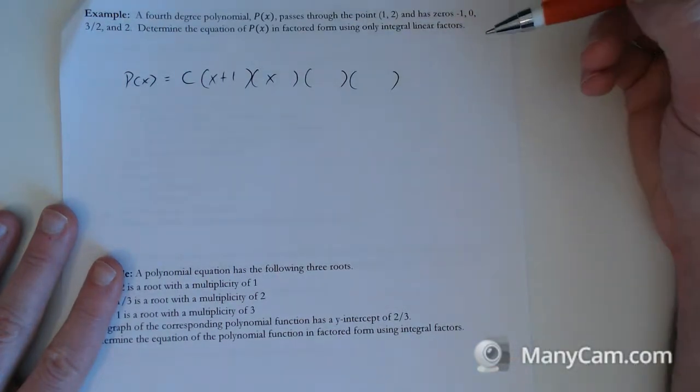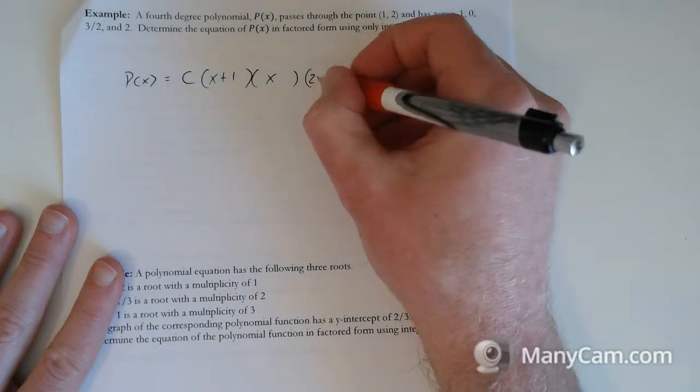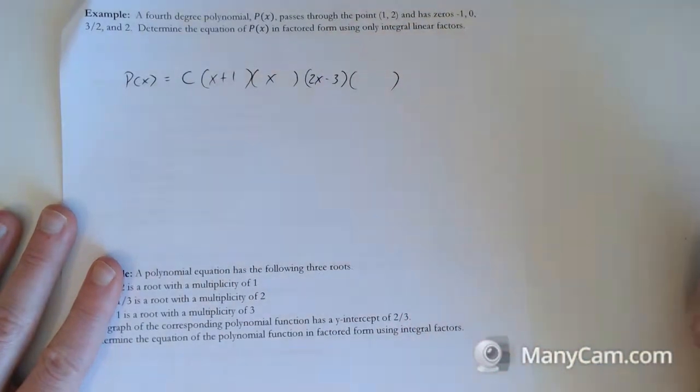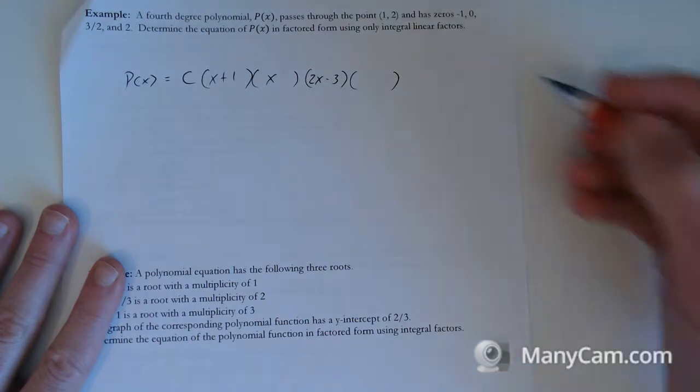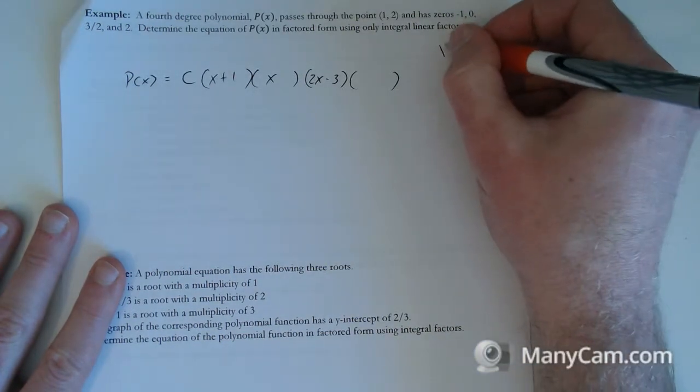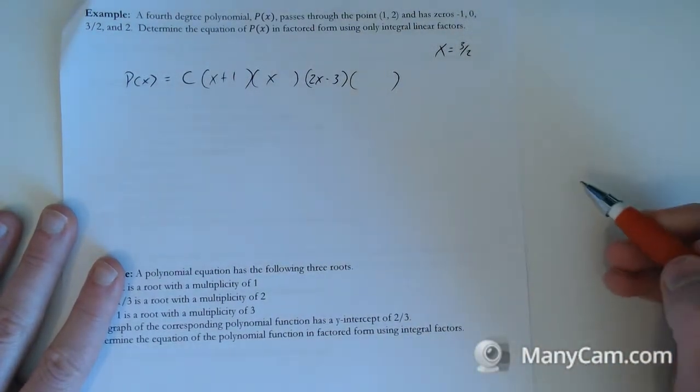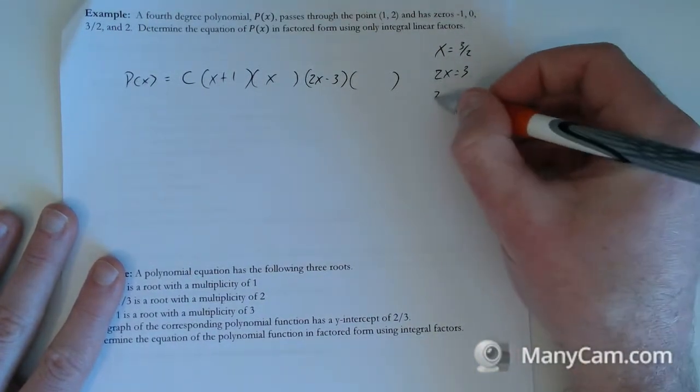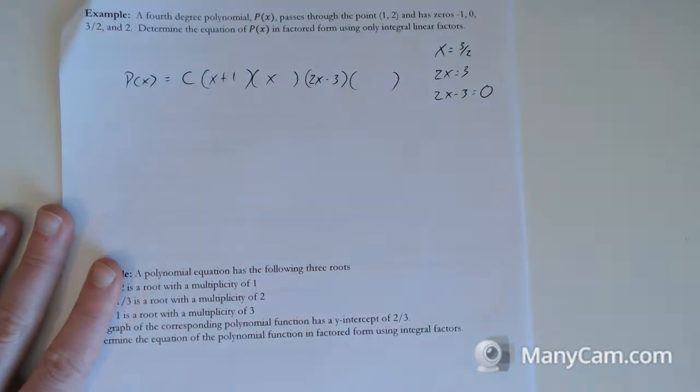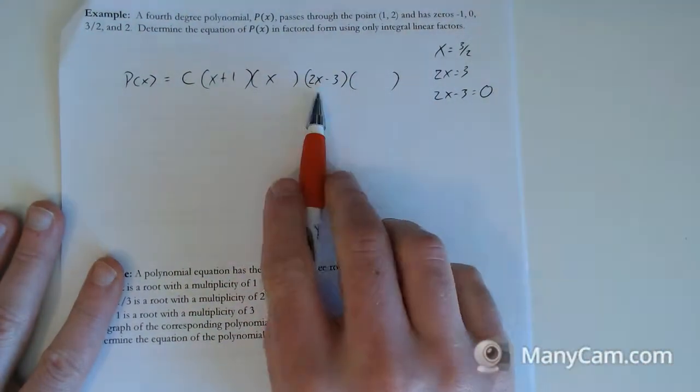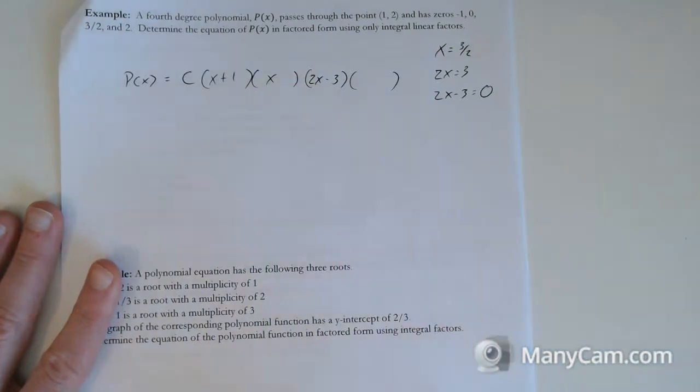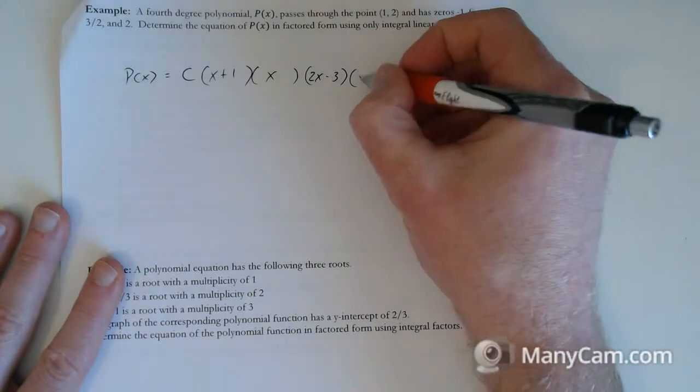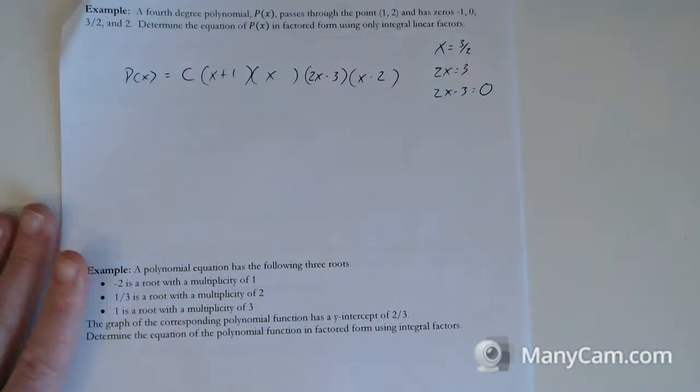So our polynomial starts out with something there and four brackets. From the minus 1, it's going to be x plus 1. From the 0, actually just x. From the 3 halves, so the 2 comes up and then the 3 subtracts, so it should be 2x minus 3. From 3 halves, x equals 3 halves, and we want to turn that into a 0. So the 2 comes up, and then you subtract the 3. So 2x minus 3 should be the term. Hopefully we can kind of figure that out in our heads. And then from the 2, x minus 2. That's how we start.